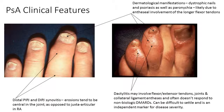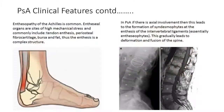Dermatological manifestations — including dystrophic nails, psoriasis, and paronychia — are likely due to enthesial involvement of the long flexor and extensor tendons. Other features include enthesiopathy of the Achilles, which is common. Enthesial organs are sites of high mechanical stress and commonly include tendon enthesis, periosteal fibrocartilage, bursa, and fat — making the enthesis a complex structure involving a number of different structures that can all be affected.